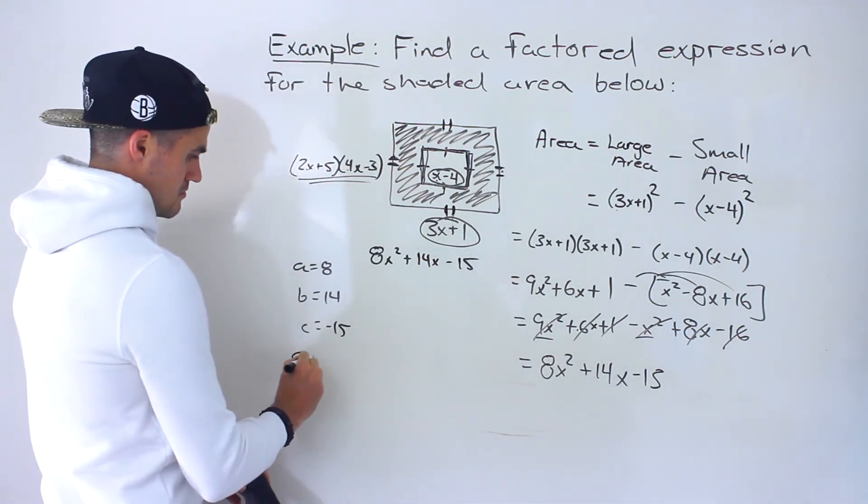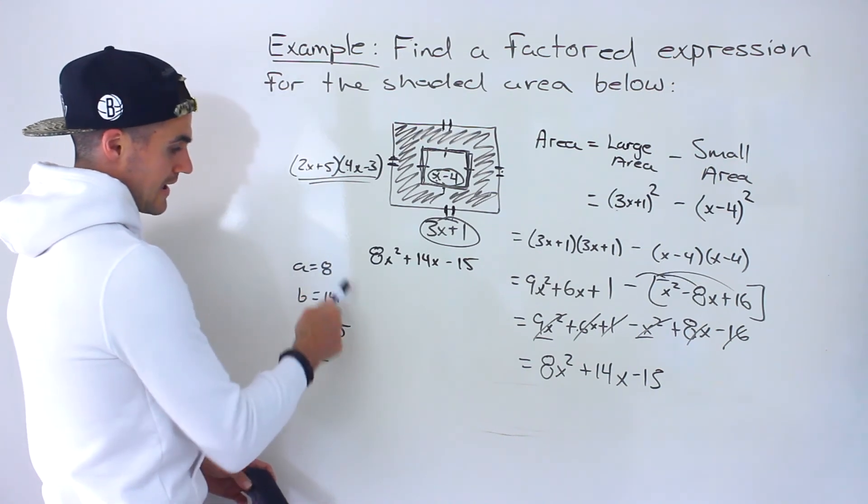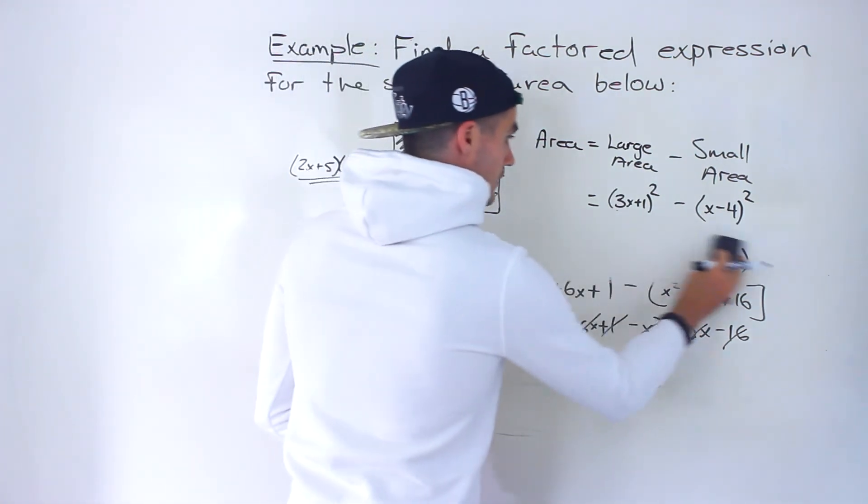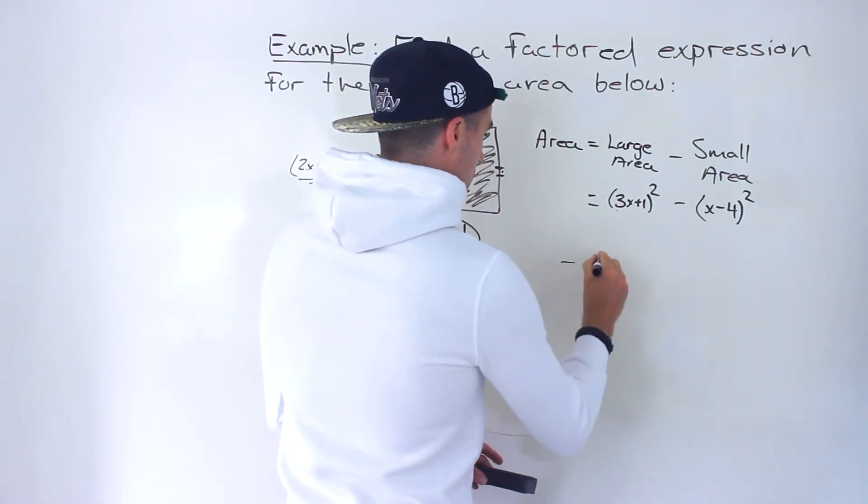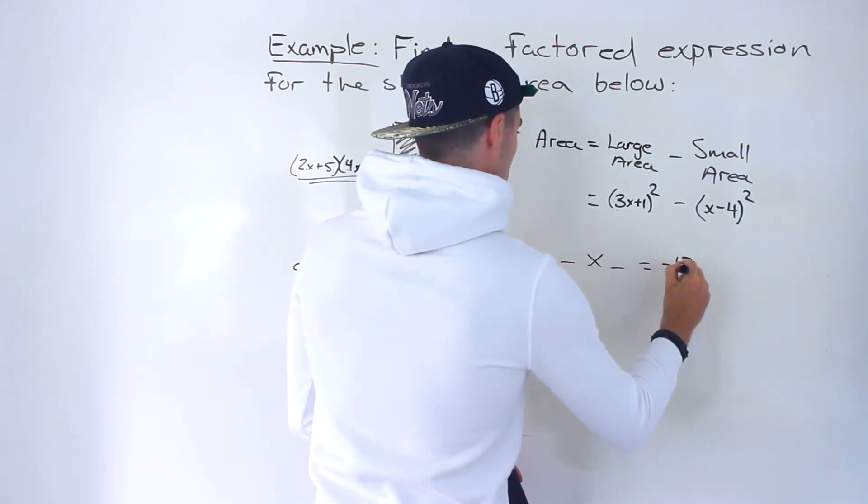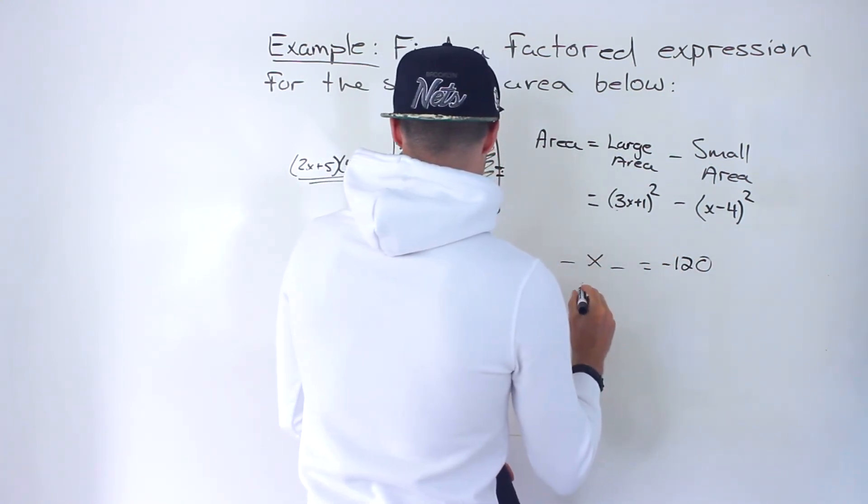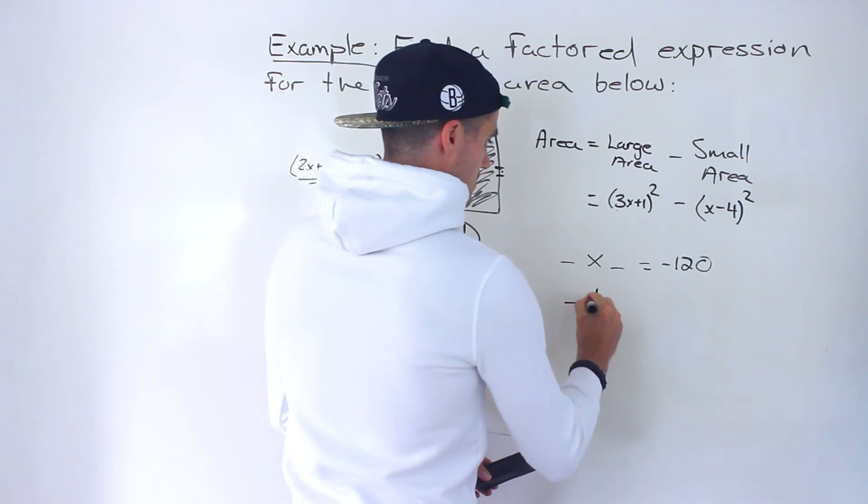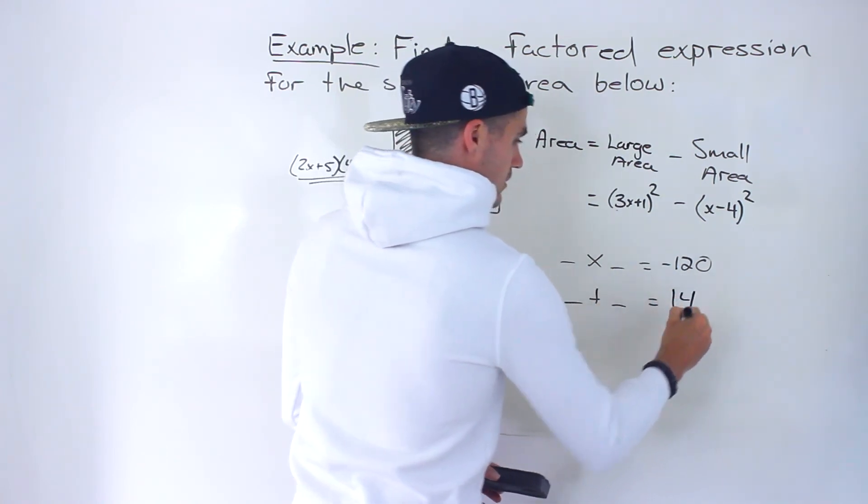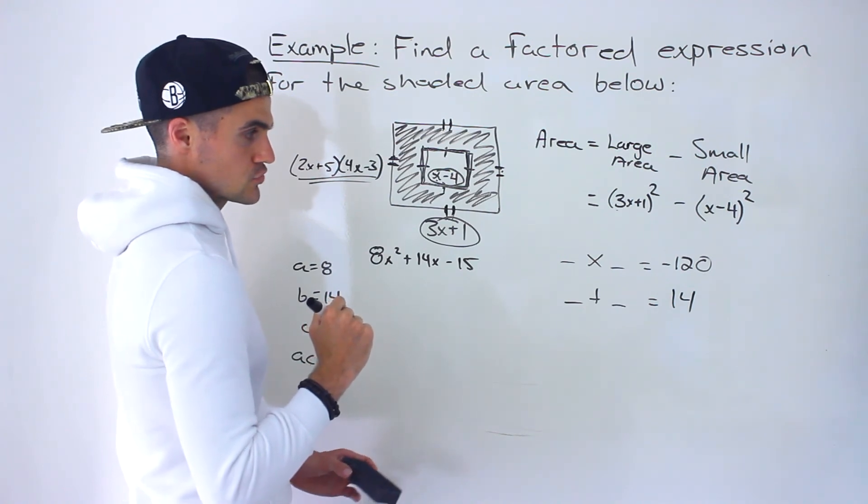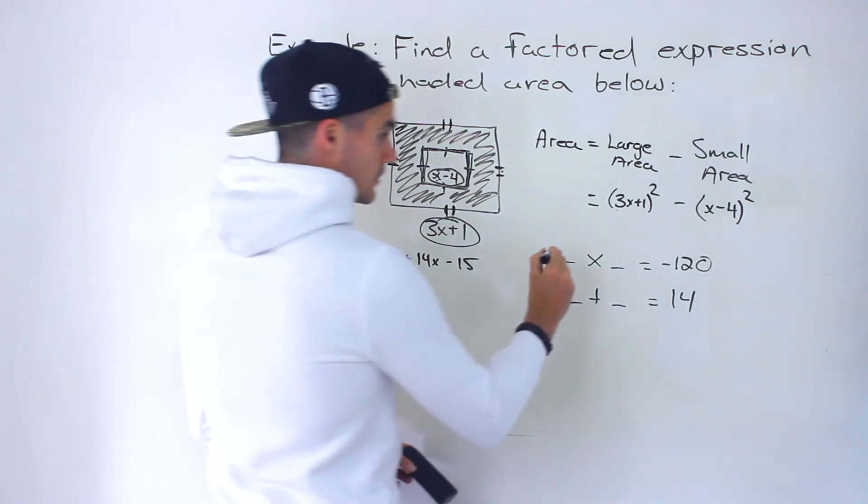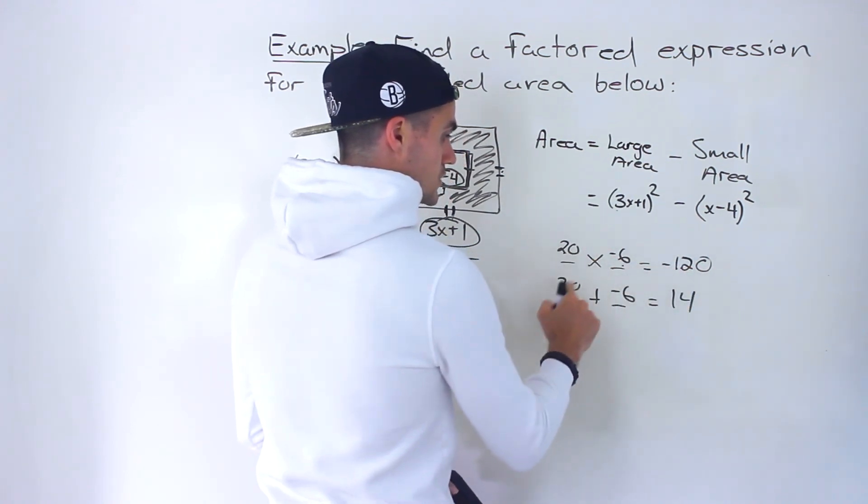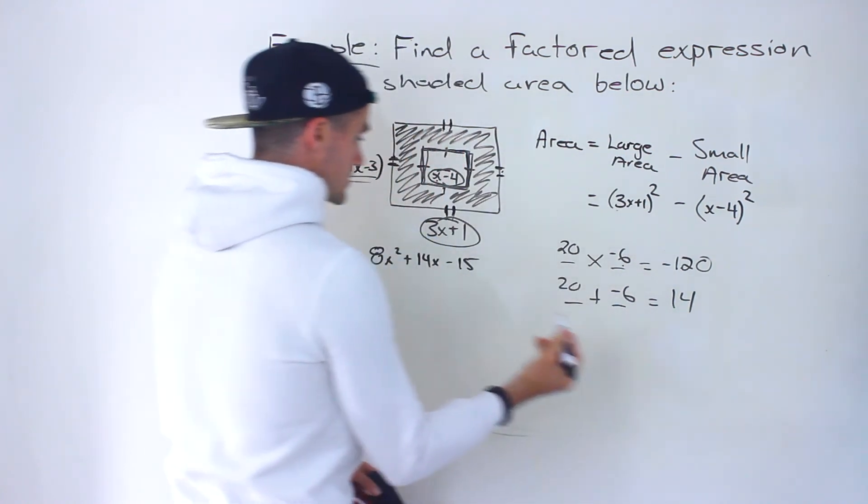What we've got to do is find two numbers that multiply to negative 120 and then add up to 14. If you try some numbers out, it's basically going to be 20 and negative 6. 20 times negative 6 is negative 120. 20 plus negative 6 is like 20 minus 6, which would give us positive 14. So then we decompose.